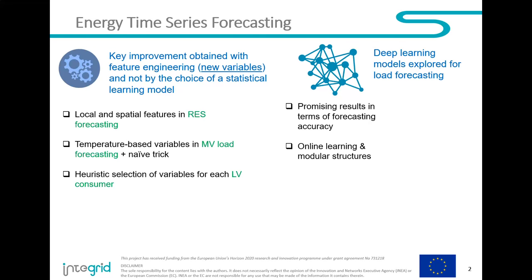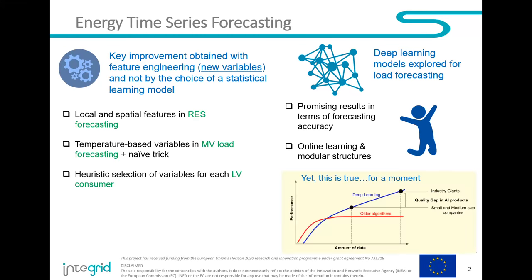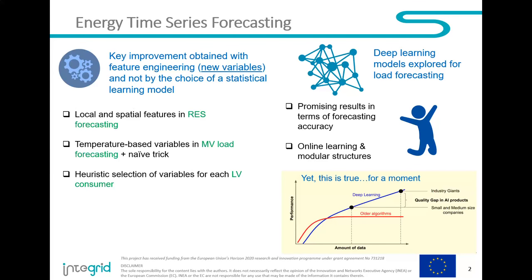Another key result is that we tried to apply deep learning. There were some promising results, but we found it only works if you have a lot of data, which is not always the case in real problems. When we have demos in a real-world network, you have a lack of data. This works well theoretically, but when you go to the field you don't have so much data and the data quality is not so good. So these more sophisticated approaches don't work as well.